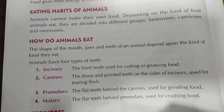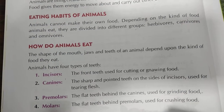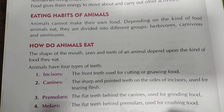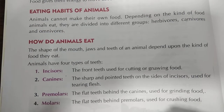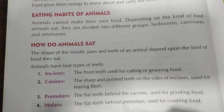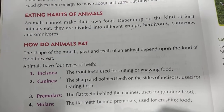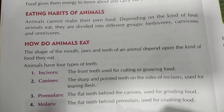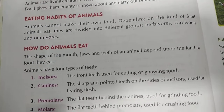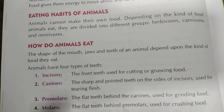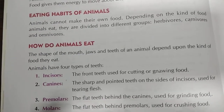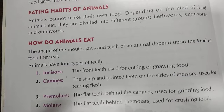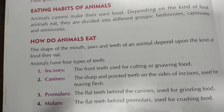The first type is incisors — the front teeth used for cutting or biting food. They are used to cut the food. The second type is canines — the sharp and pointed teeth on the sides of incisors, used for tearing flesh. When we eat non-veg, we keep the food to the side — that's where canines work, tearing the flesh.